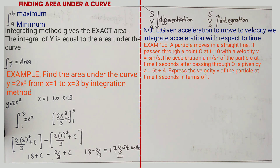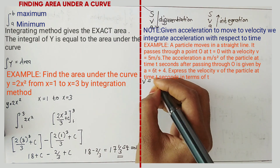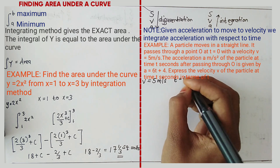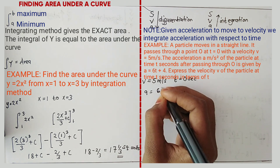An example says: a particle moves in a straight line. It passes through point O at t = 0 with a velocity V = 5 m/s. The acceleration A m/s² of the particle at time t seconds after passing through O is given by A = 6t + 4. Express the velocity V at time t seconds in terms of t.